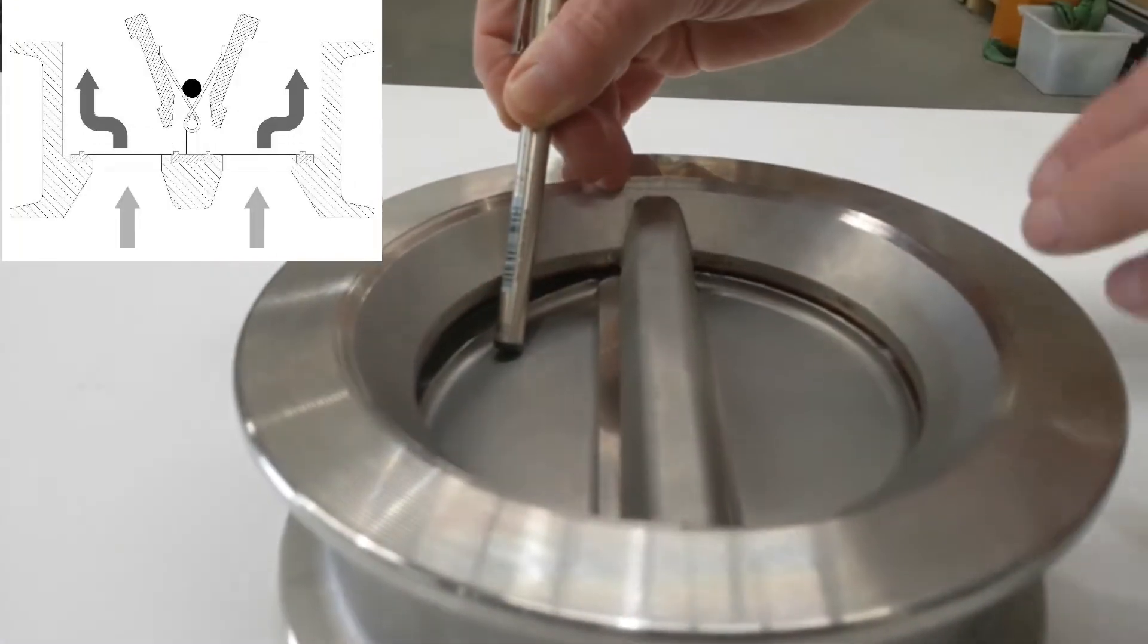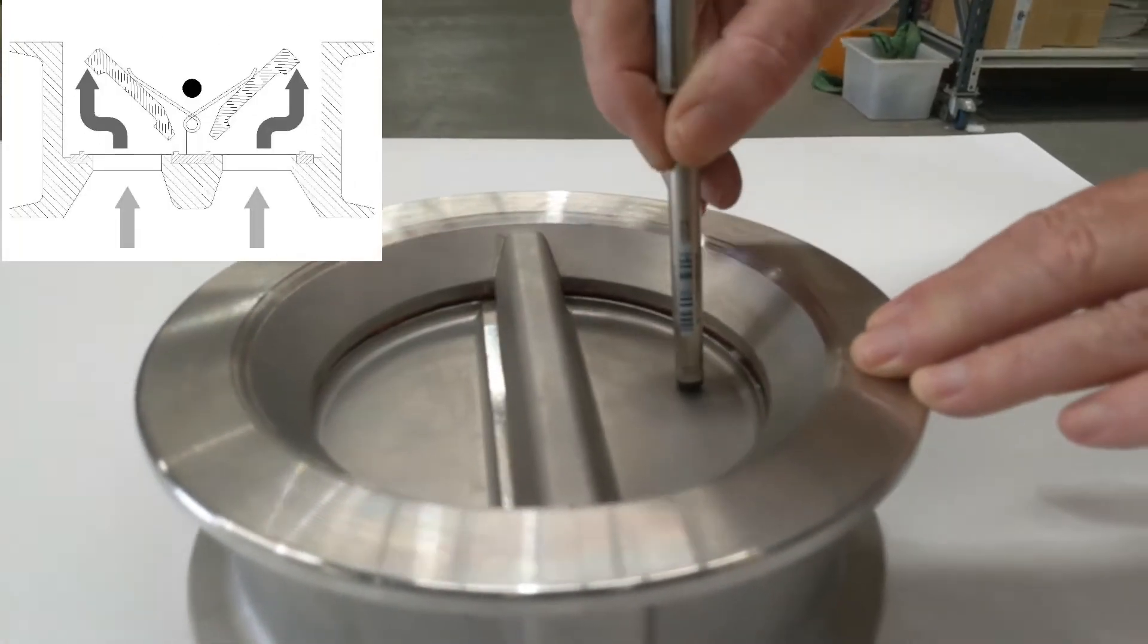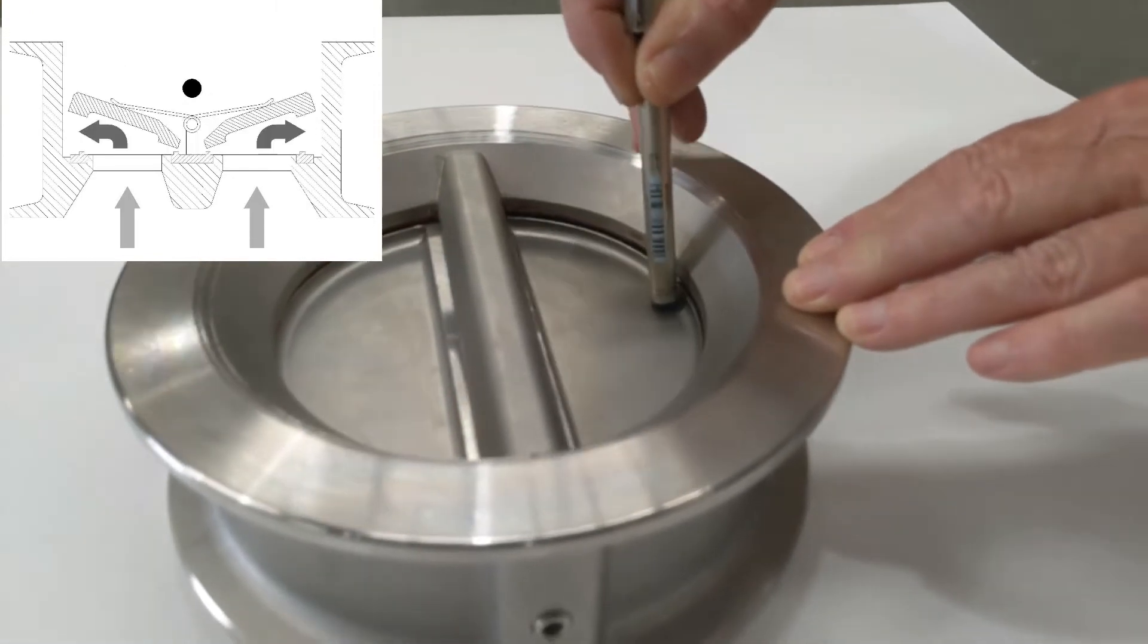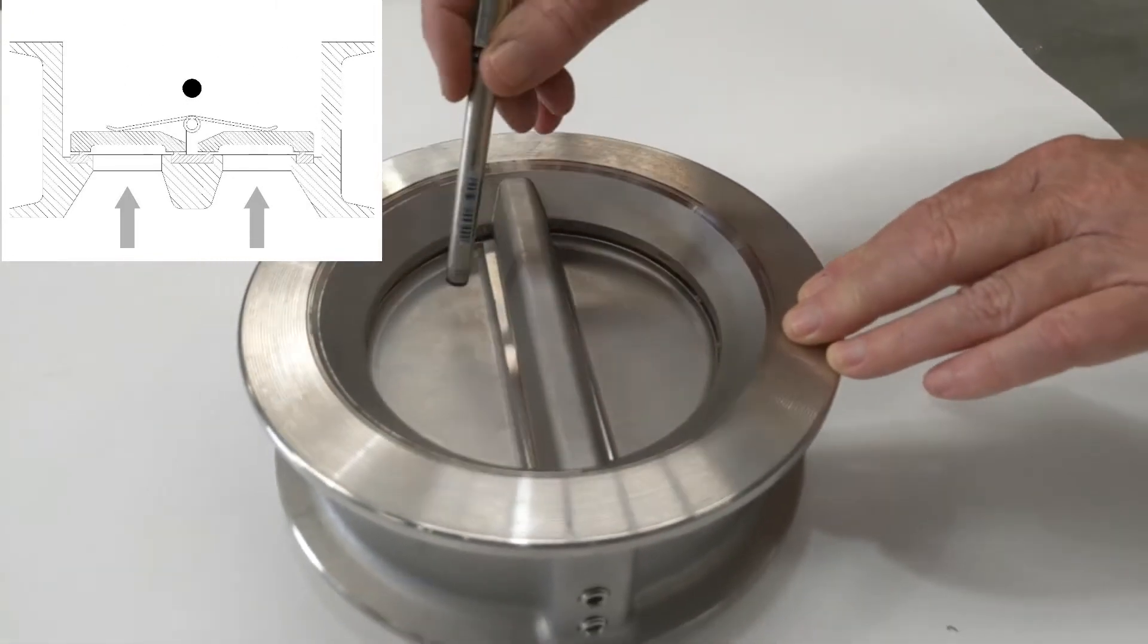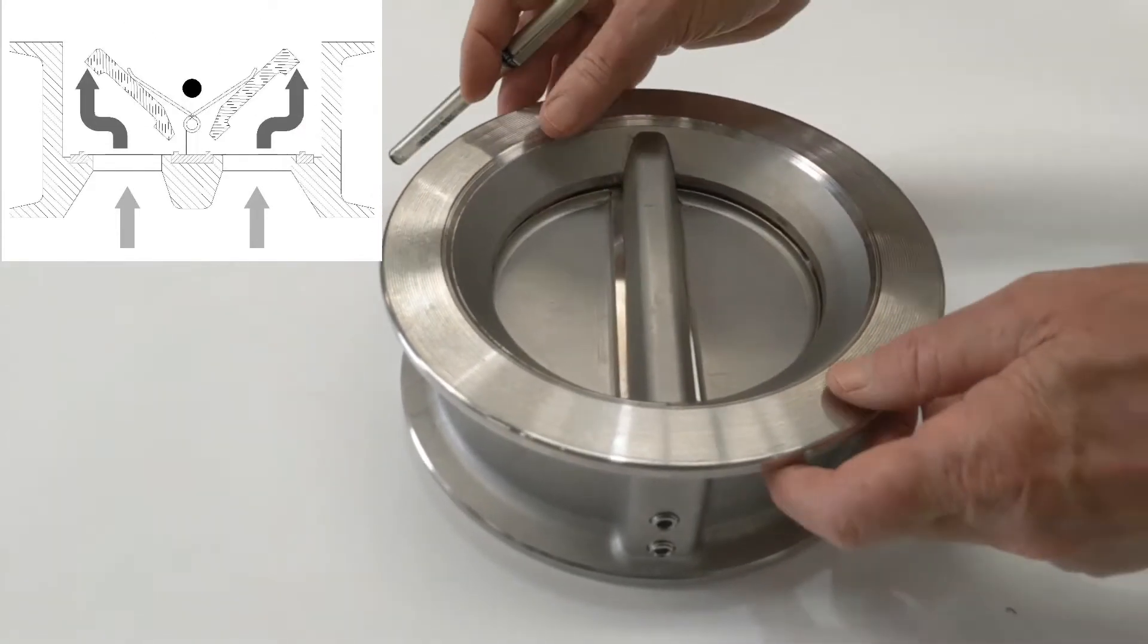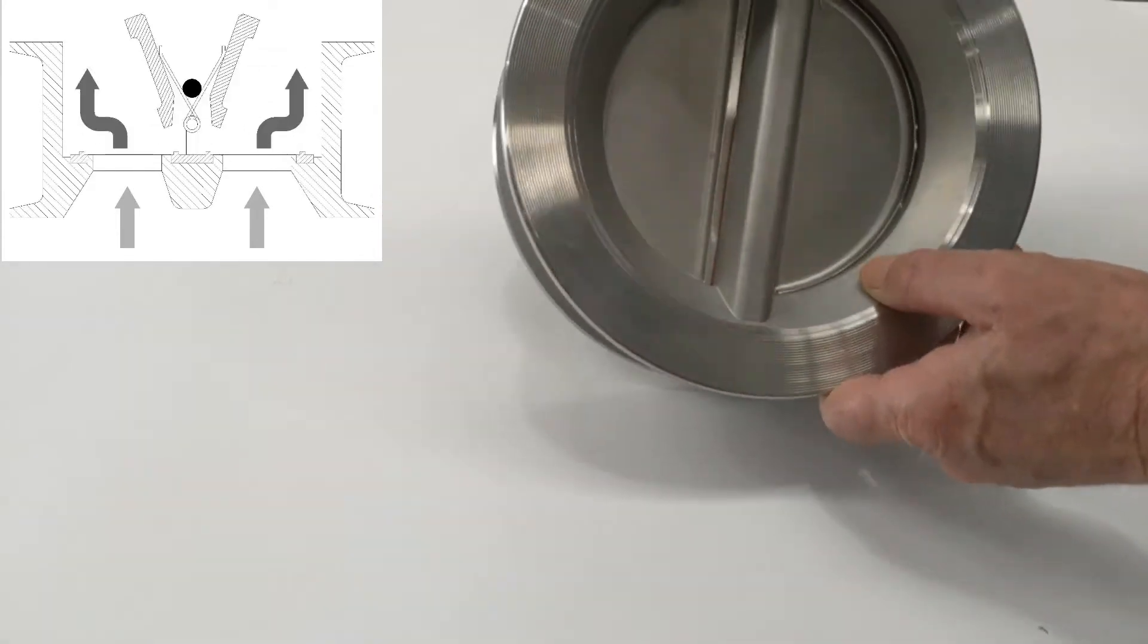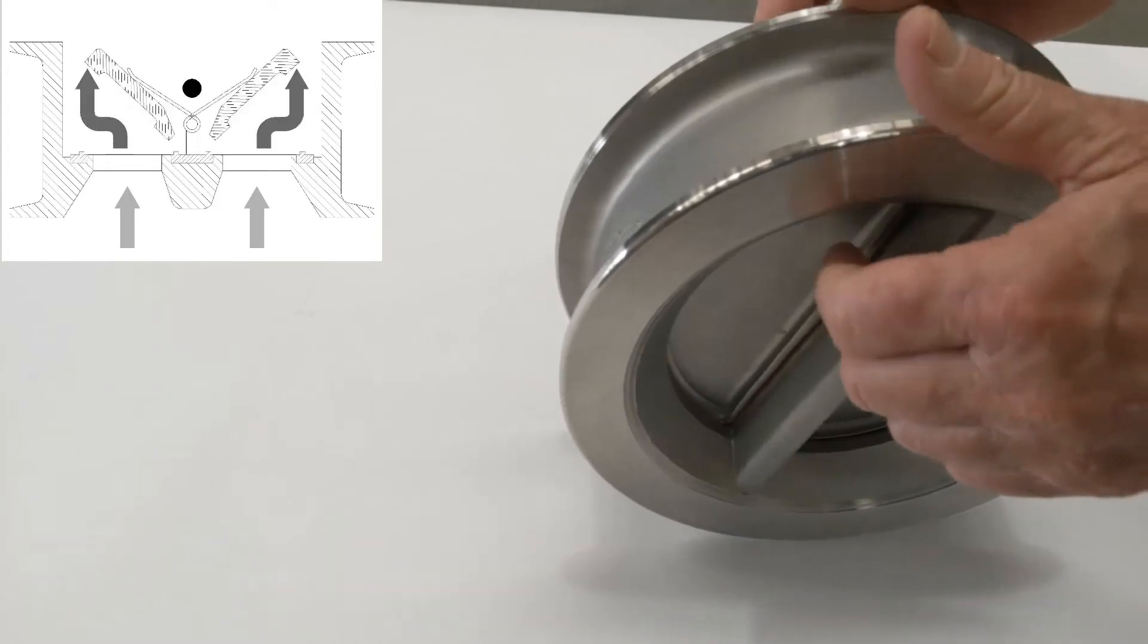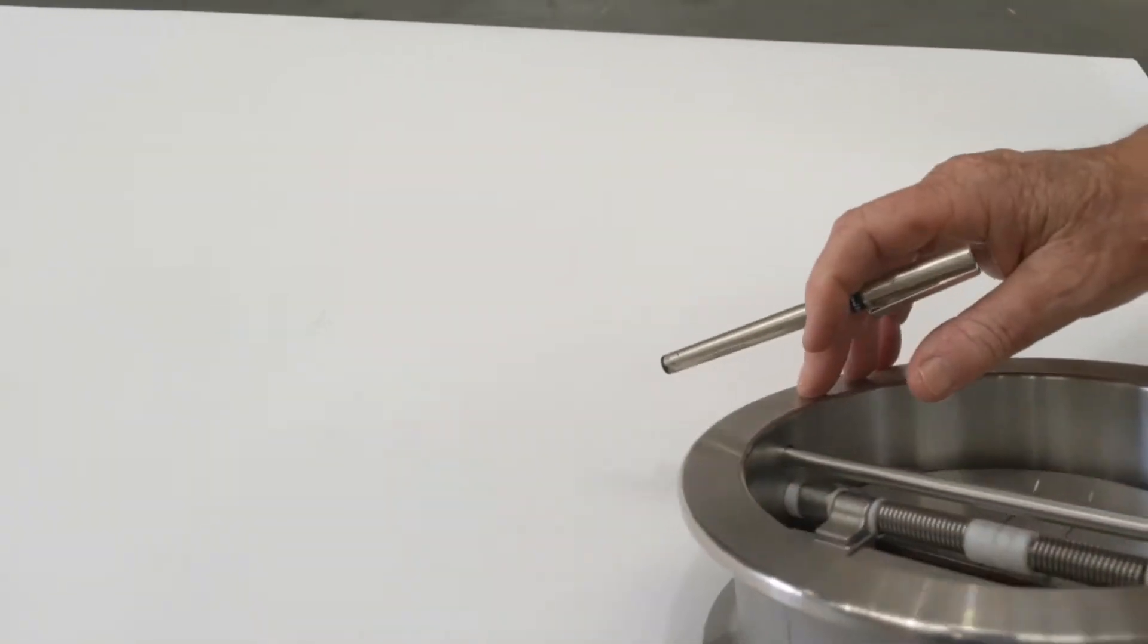Underneath here, this is a duo check pushes in like that. The FKM seat is not really in direct line of contact with the product. If I turn this over on here you can see...